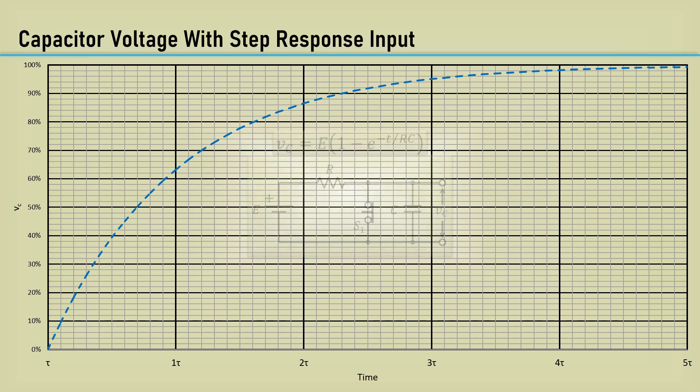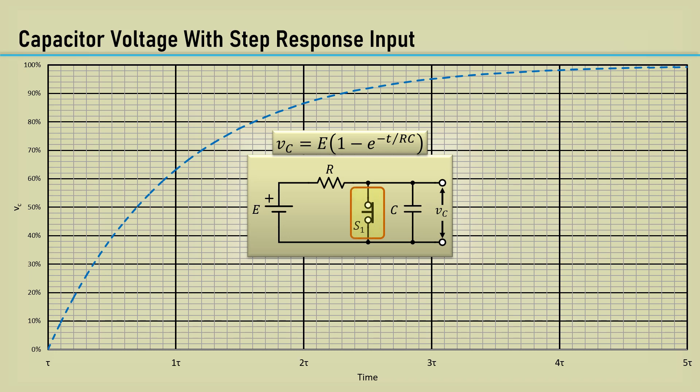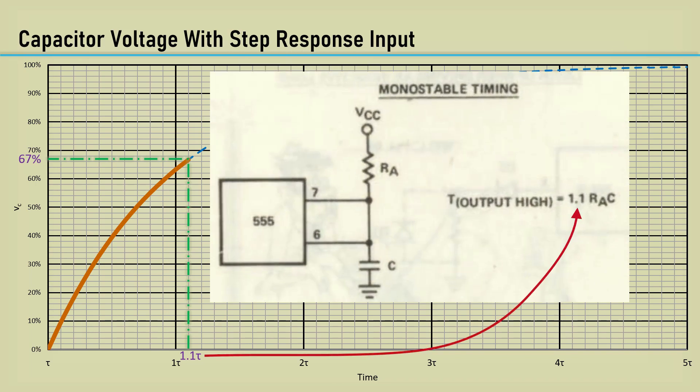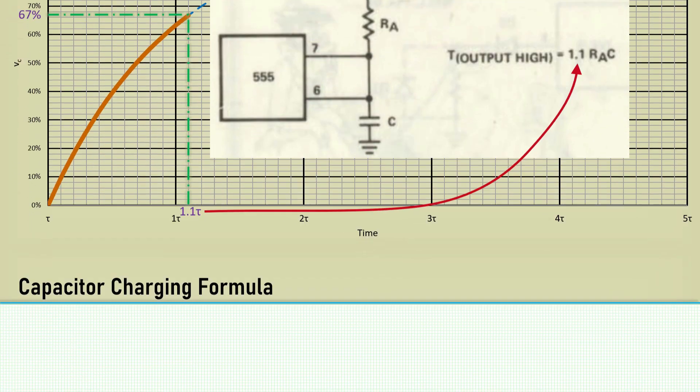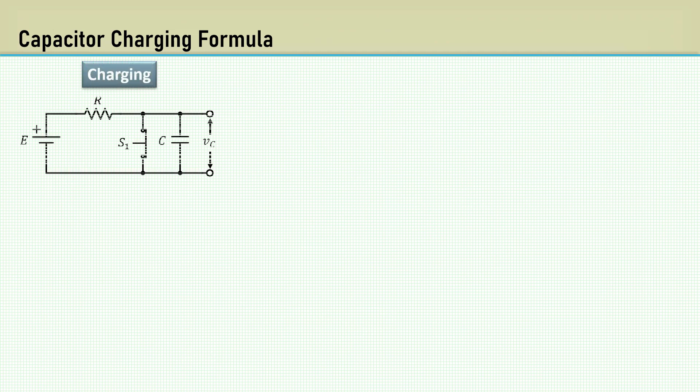Let's leave the charging curve as a dotted line target for this example. One difference with the 555 timer is the capacitor is shorted with an internal transistor switch and is open to allow the capacitor to charge. When the capacitor reaches 2/3 VCC, the time is 1.1 tau. Well, that tells us where the 1.1 numeric constant came from.